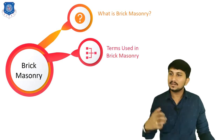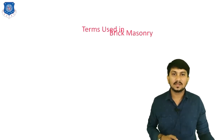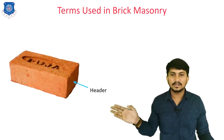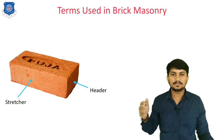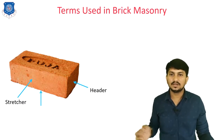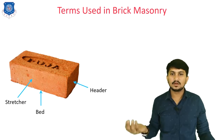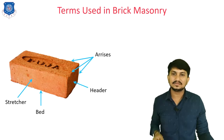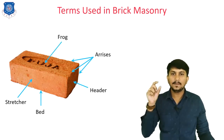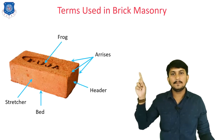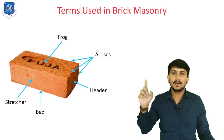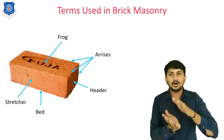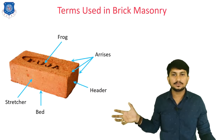Next are the terms used in brick masonry. The smaller part of the brick is called the header, and the lengthwise part of the brick is called the stretcher. The bottom portion is called the bed. The edges of the brick are called arises. The upper portion of the brick is called the frog, which is generally provided for marking the company's logo and is also used for bonding of bricks.